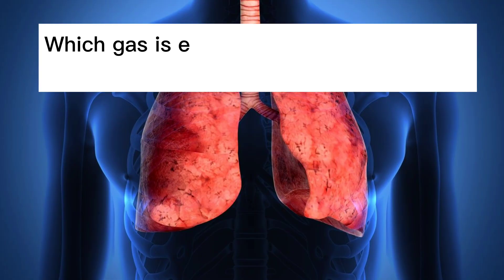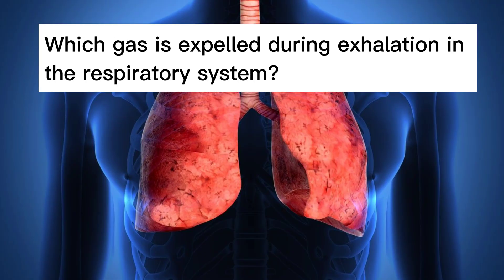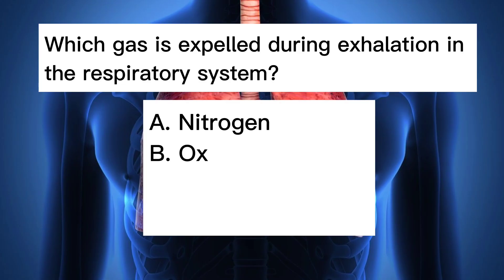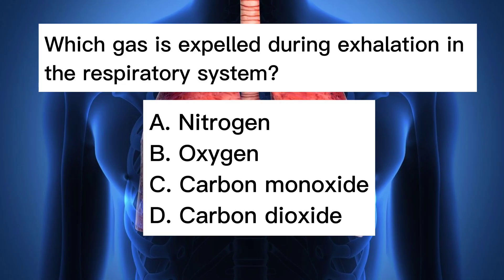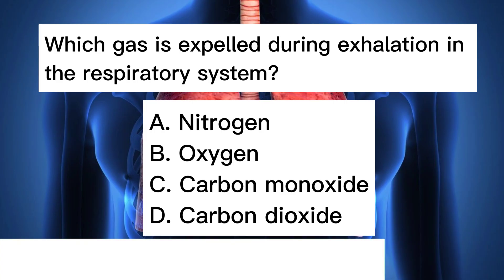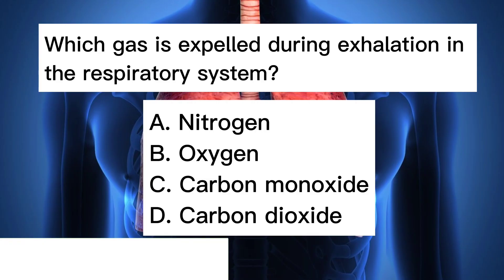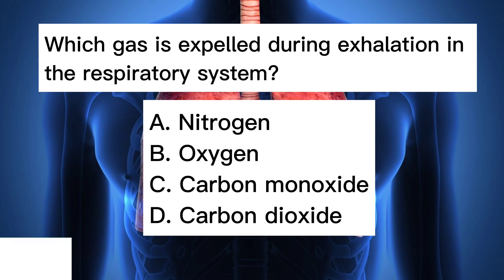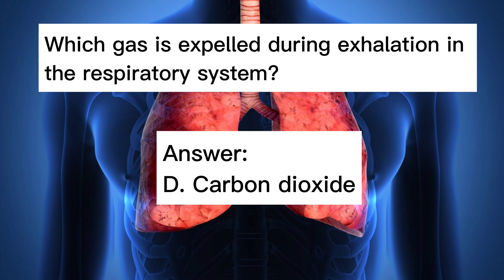Which gas is expelled during exhalation in the respiratory system? A. Nitrogen. B. Oxygen. C. Carbon monoxide. D. Carbon dioxide. Answer: D. Carbon dioxide.